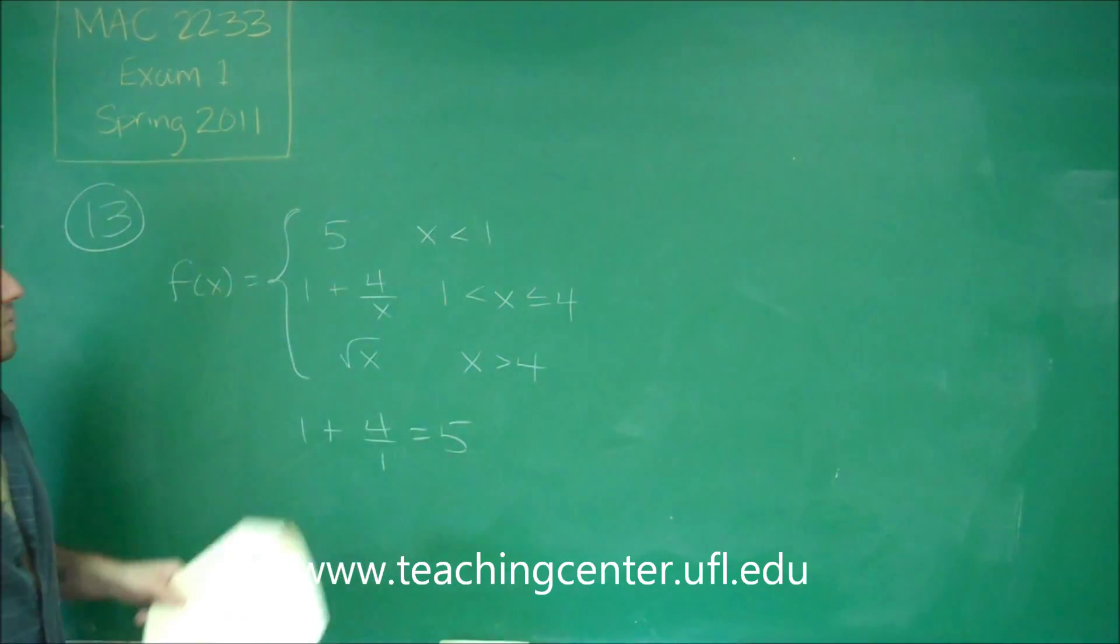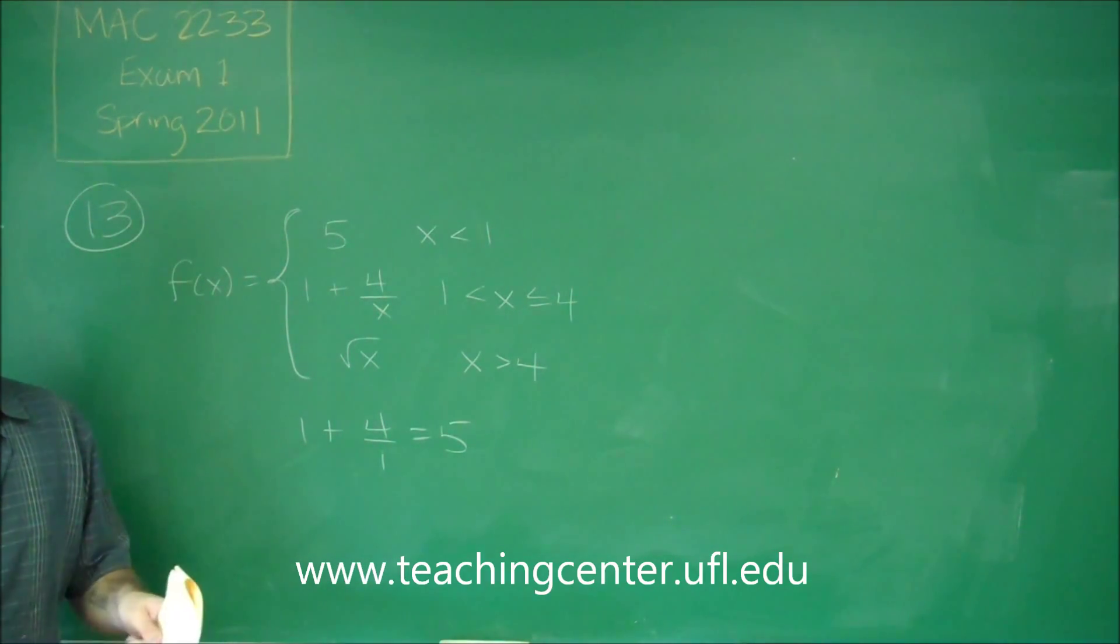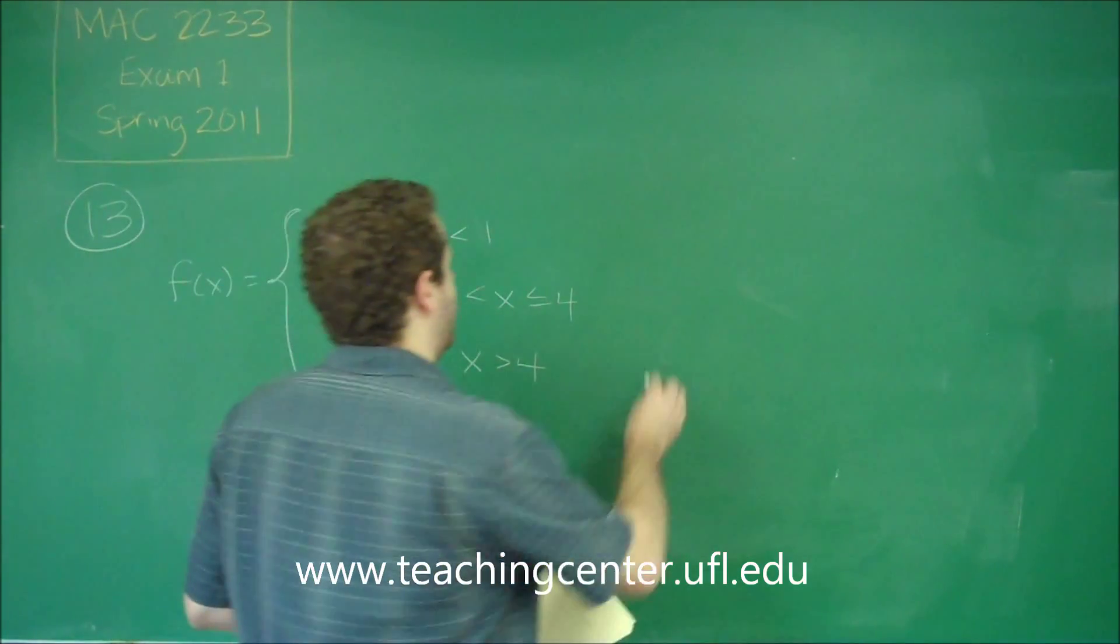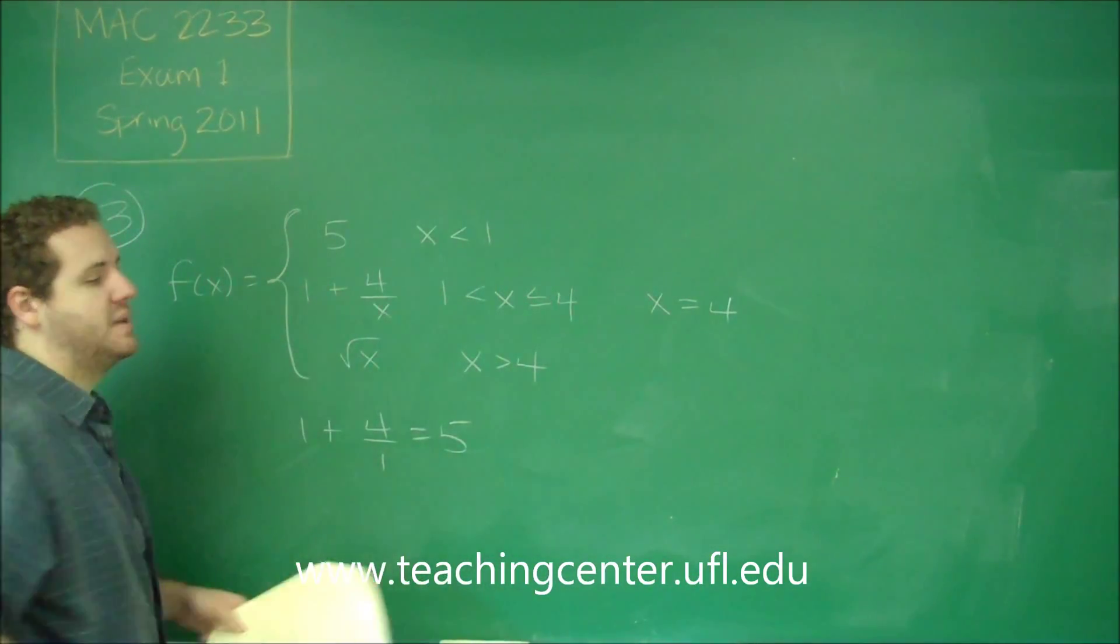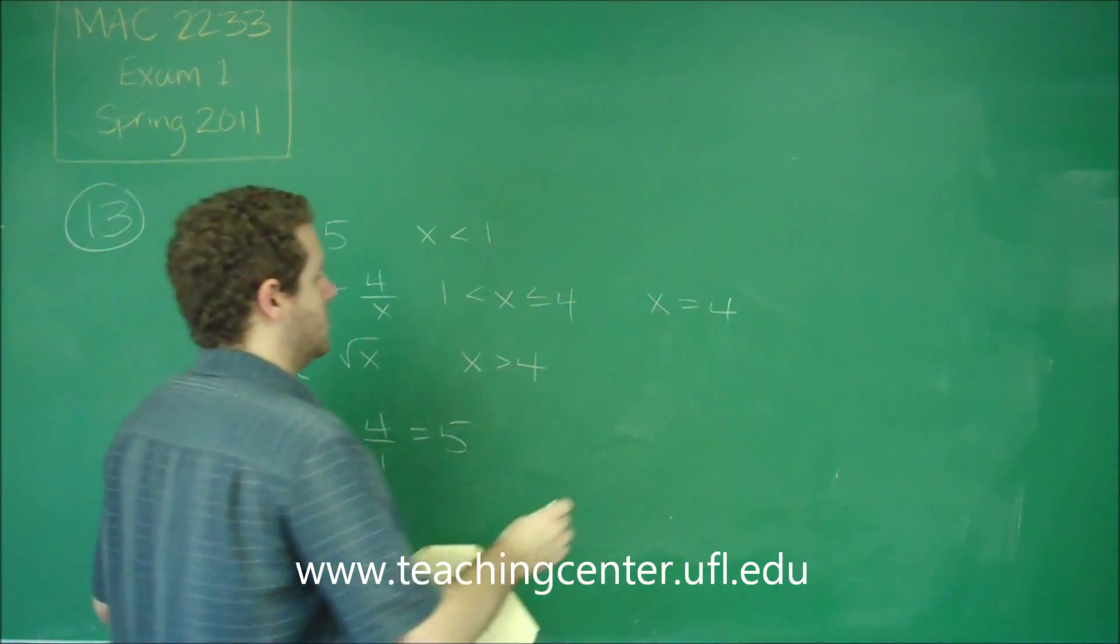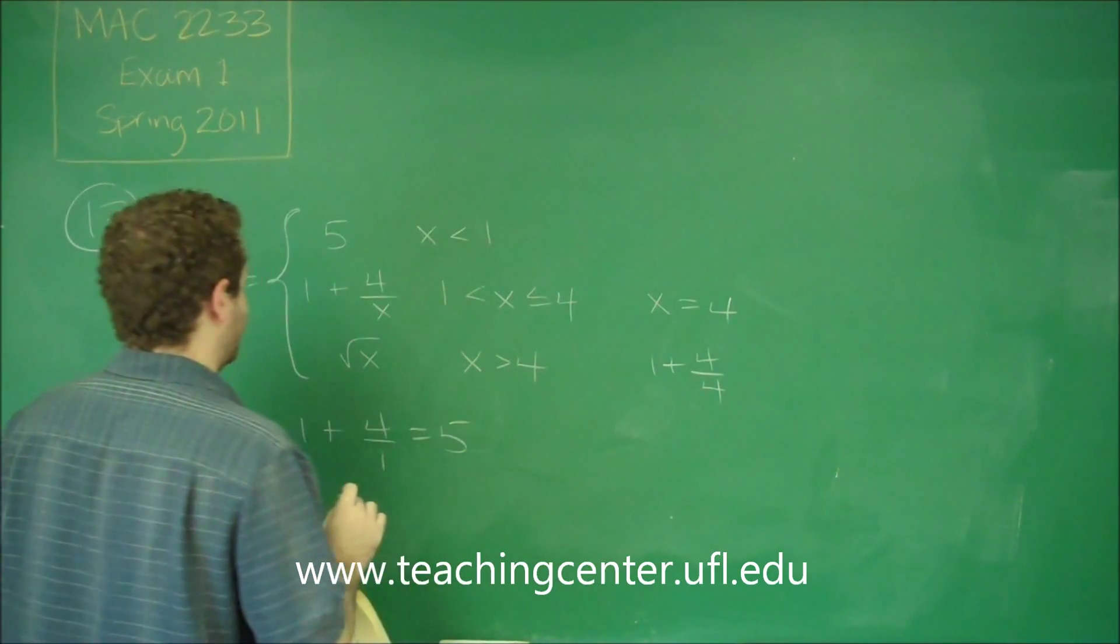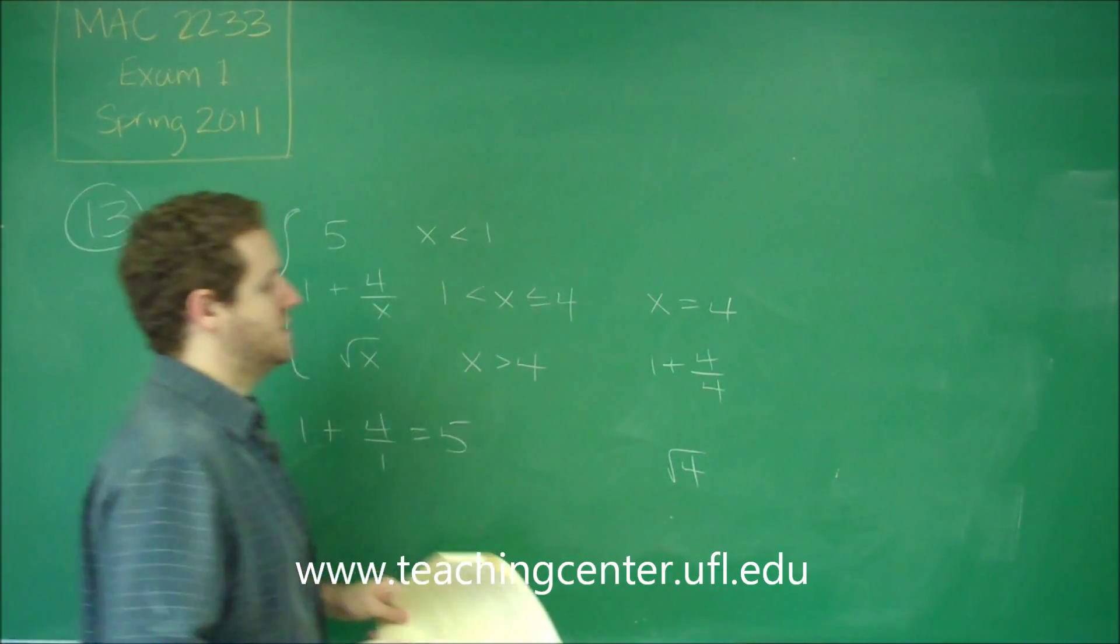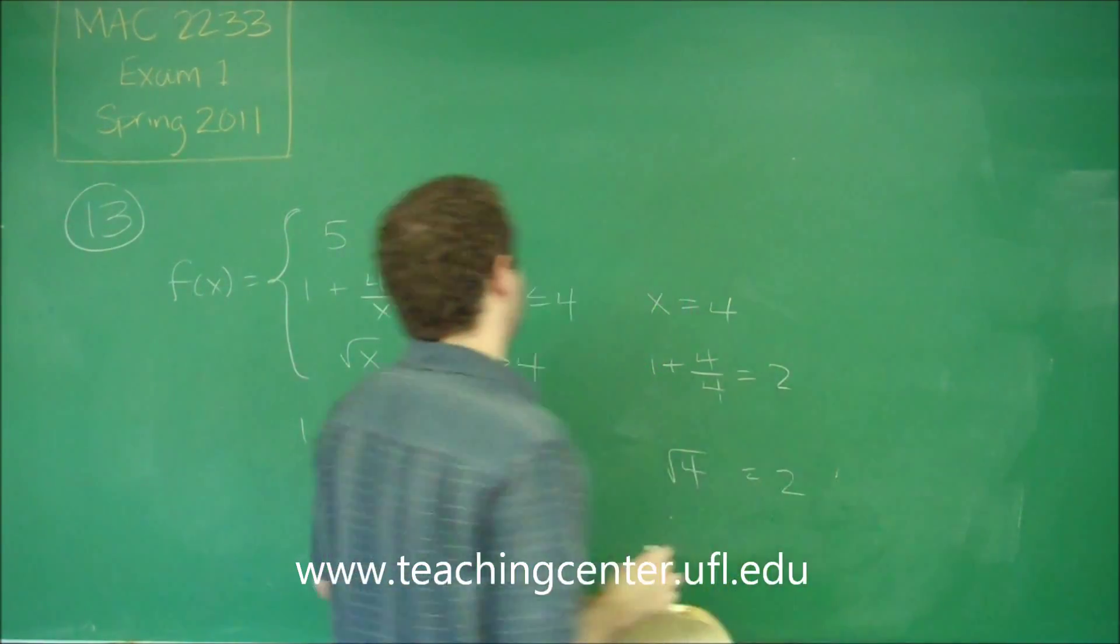So let's check where these two pieces meet, and if they're at different y values, then we might have a jump discontinuity as well. So let's try x equals 4 for the second and third pieces, because that's where they meet. So we would have 1 plus 4 over 4 for the second piece. We would have square root of 4 for the third piece. This is 2. 1 plus 1. This is 2.